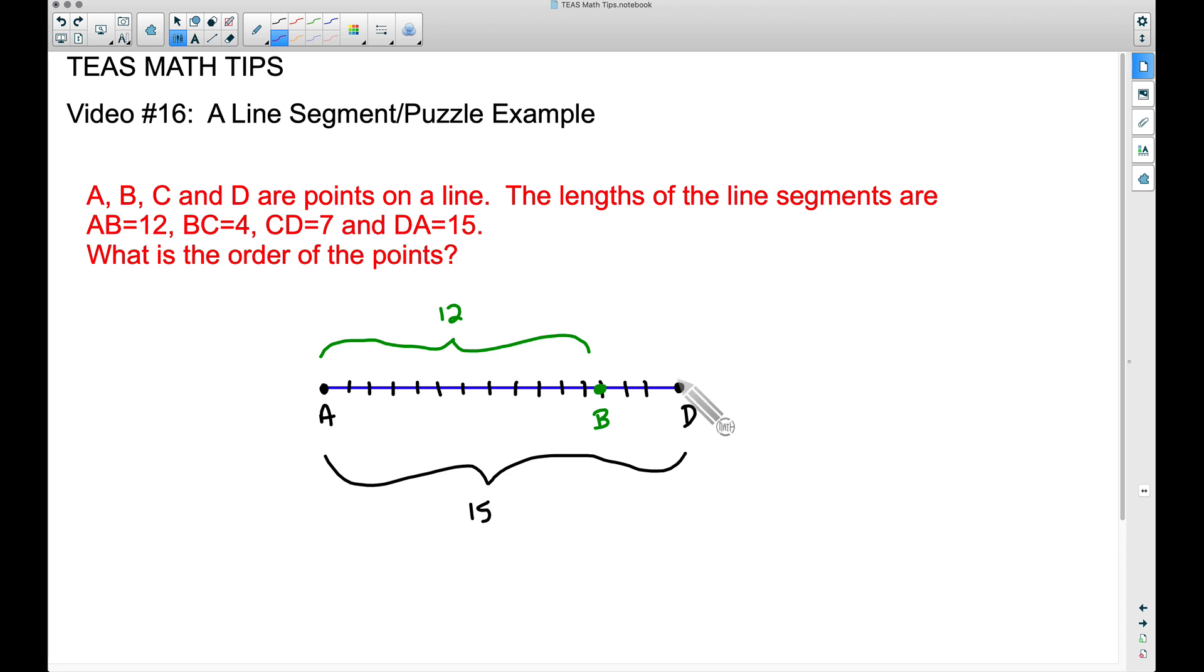So I can count backwards: one, two, three, four, five, six, seven. I can put C right there, and that's going to give us a distance from C to D of seven units.